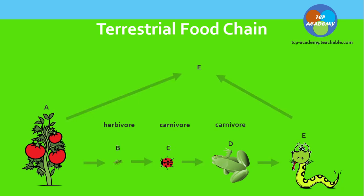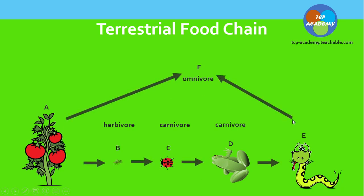Here you're looking at what I would call a hybrid food chain. We're seeing A as the producer, B as the herbivore, C as carnivore, D as carnivore. What is the feeding type here for E? The feeding type for E would be carnivore. So our problem is at F — what type of organism do we have here? What's the feeding type? The feeding type here is, of course, omnivore. How do we know? This organism at F is eating both plant and animal, and that's what makes it the omnivore.